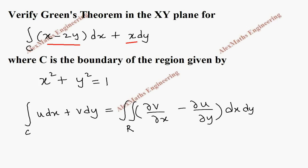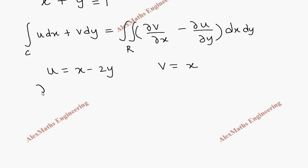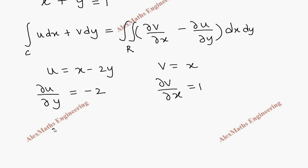From the given question, we take u equal to x minus 2y and v equal to x. From this we can find ∂u/∂y which is minus 2, and ∂v/∂x which is 1.